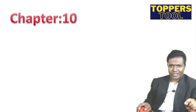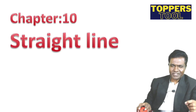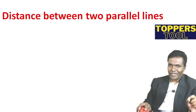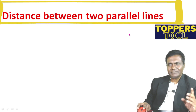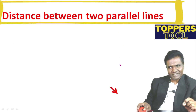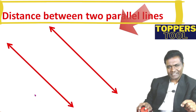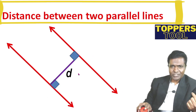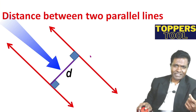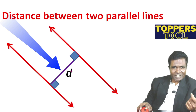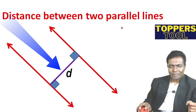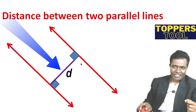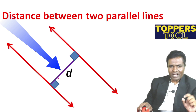Hello students, welcome to another session of Chapter 10: Straight Lines. In this session we will be discussing an important derivation — the distance between two parallel lines. That means, suppose these are two parallel lines, then the distance between them means the shortest distance between these two parallel lines.